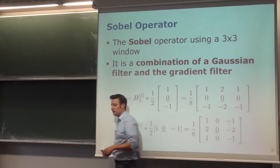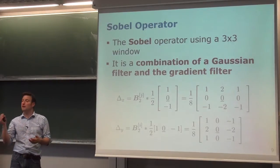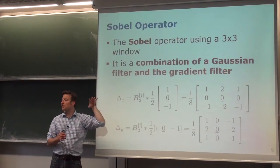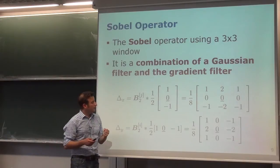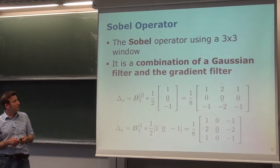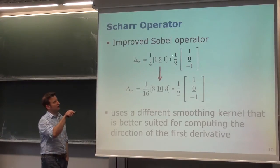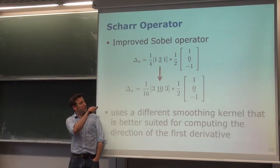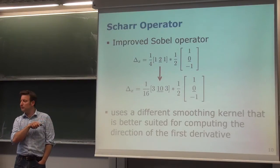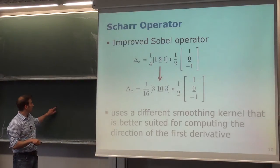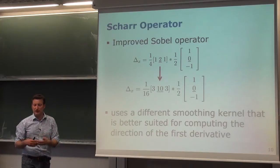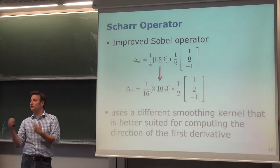By moving the Sobel operator over the image we obtain partial derivatives in a smooth fashion. We can question whether using a Gaussian filter is the best smoothing approach. The Sobel operator uses a smoothing kernel with values 1, 2, 1 — these are the weights given to the center pixel and its left and right neighbors.